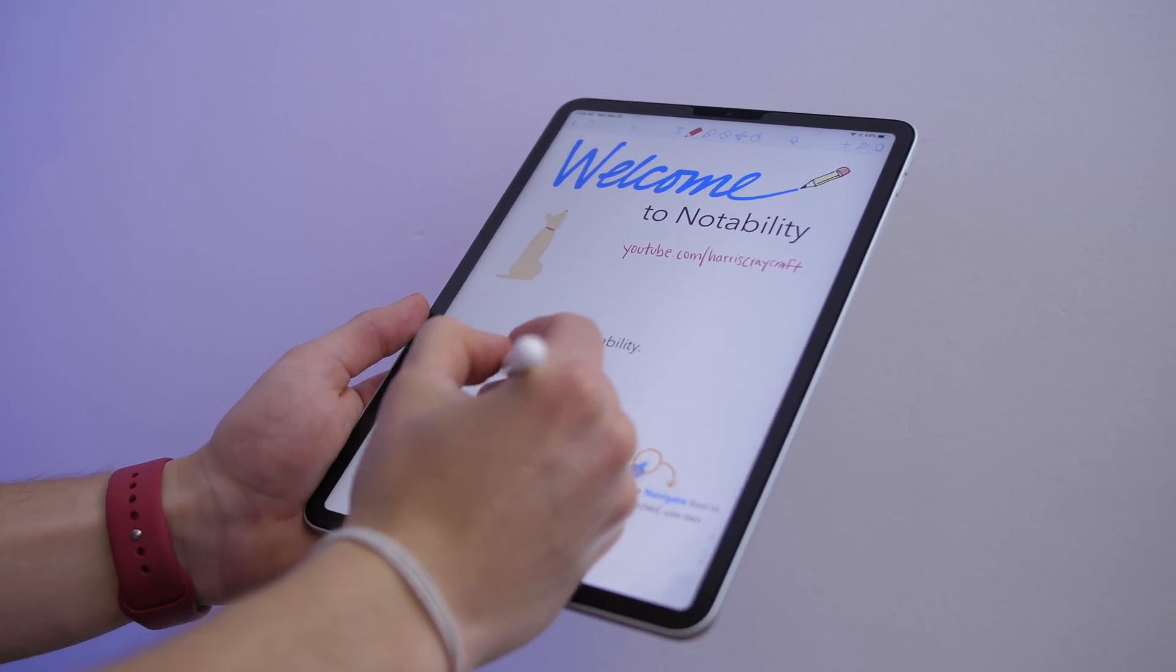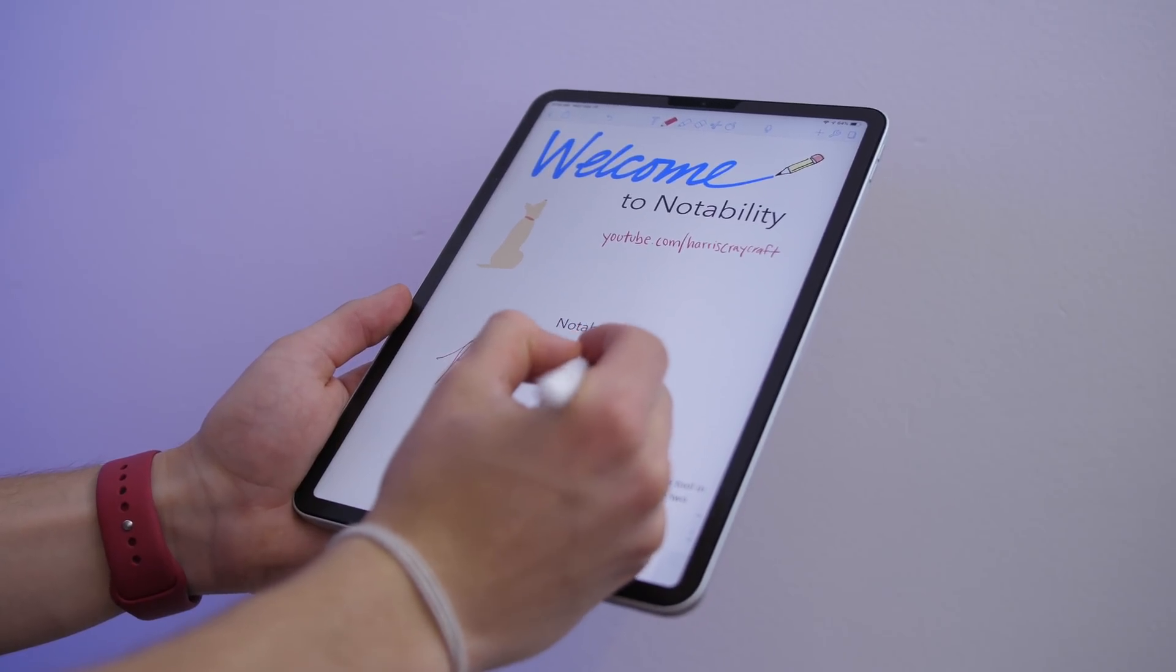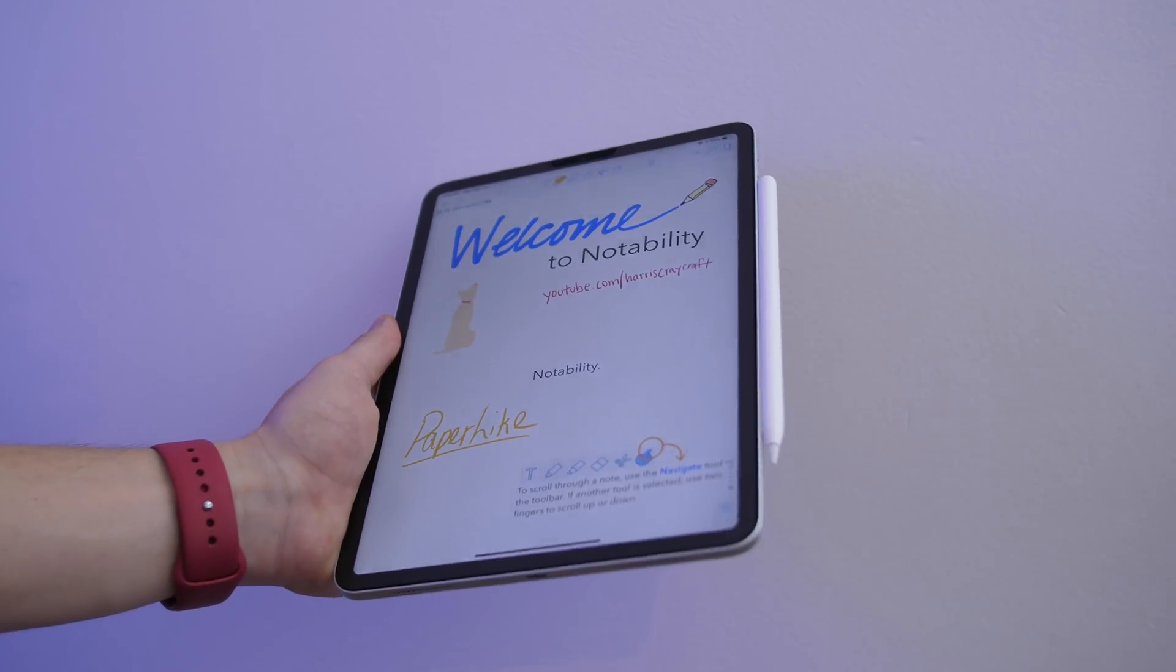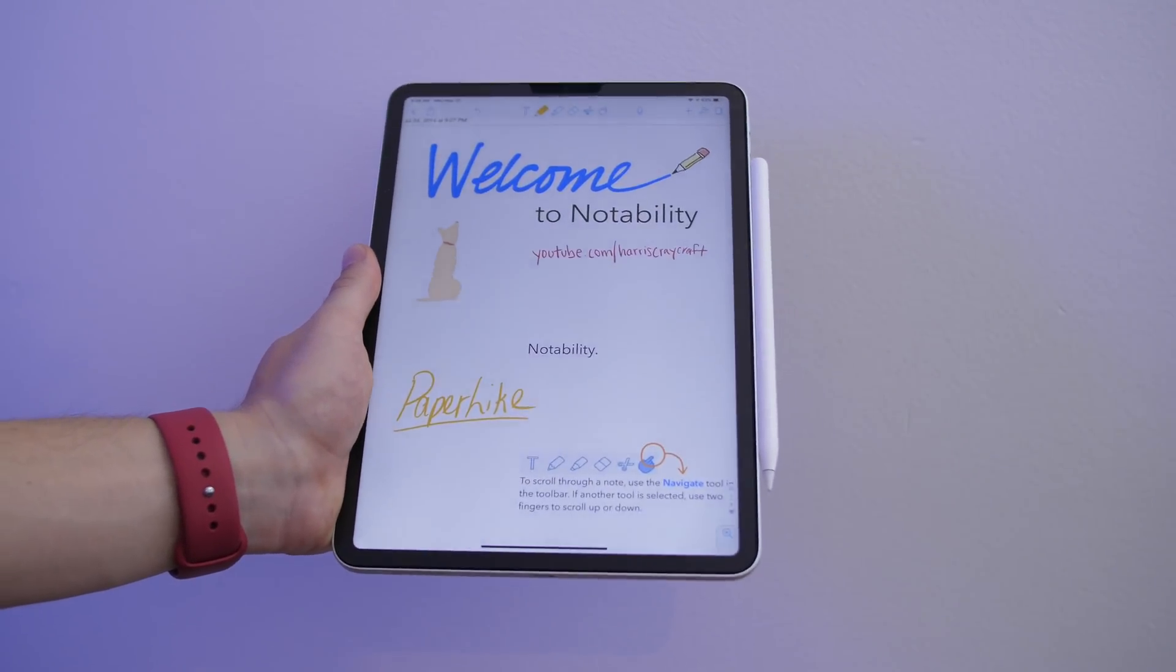This video is presented by Paperlike, a screen protector that will remove the fingerprints, the glare, and the oils from your iPad screen, while making the Apple Pencil feel like you're writing on paper. I'll leave a link in the description.